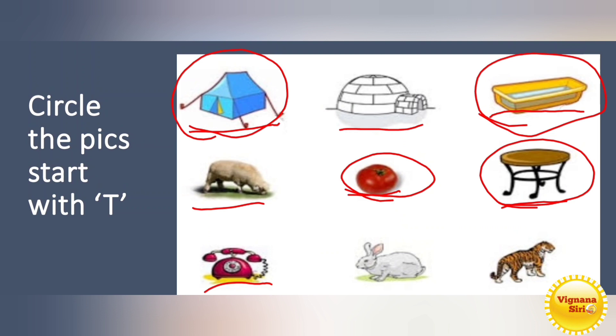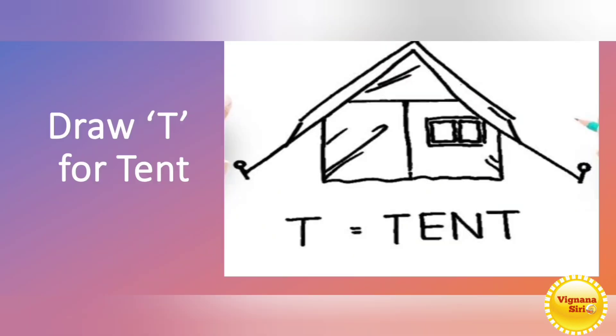This one T for telephone. Now everyone is having cell phones, but previously telephone was the one. Even now also it's like landline. Some people will have landlines. That is called telephone. Rabbit. And the last one is tiger. So T for tiger. So total so many are there.